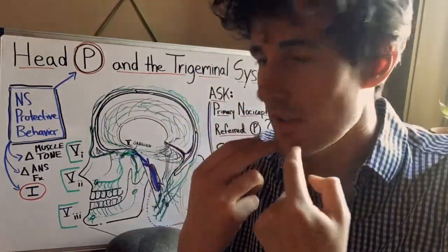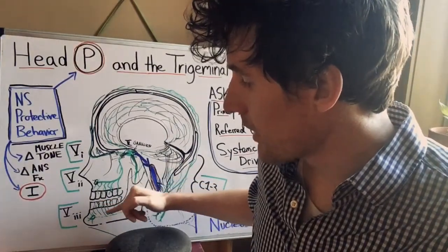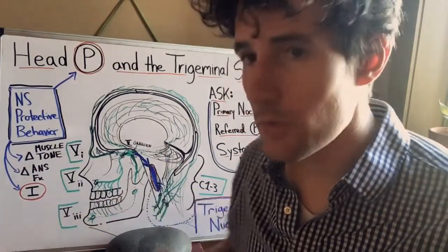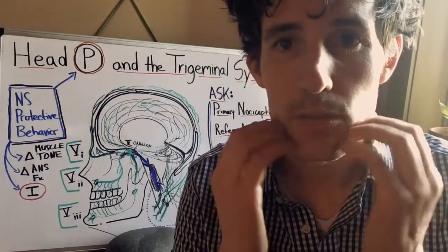Inside the bone it courses anteriorly innervating the bottom row of teeth and also emerging to the surface here and here as the mental nerve innervating the skin right here.